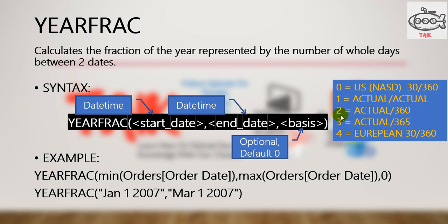If you select option two, it will calculate actual days between the dates divided by 360 days in a year. If you select three, it will calculate the actual days between these dates divided by 365 days in a year.